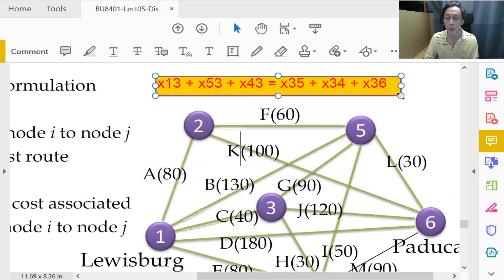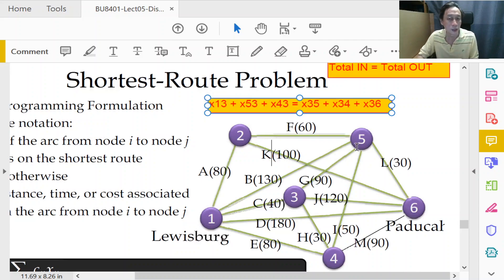So that would be the constraint that we are looking for that expresses the total in equals to total out principle for three, this particular intermediate node called three. Okay, so and then that's it, so what we need to do is we write out the template for trans shipment node.